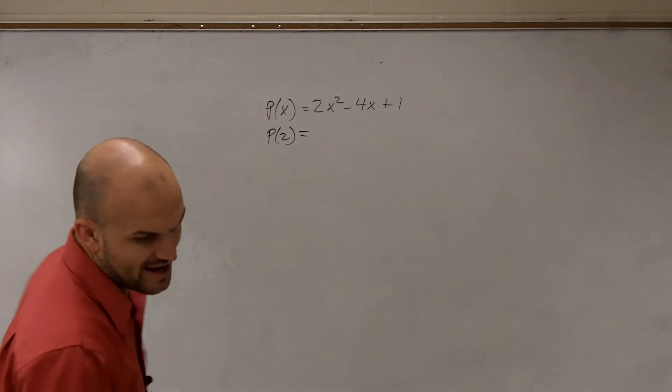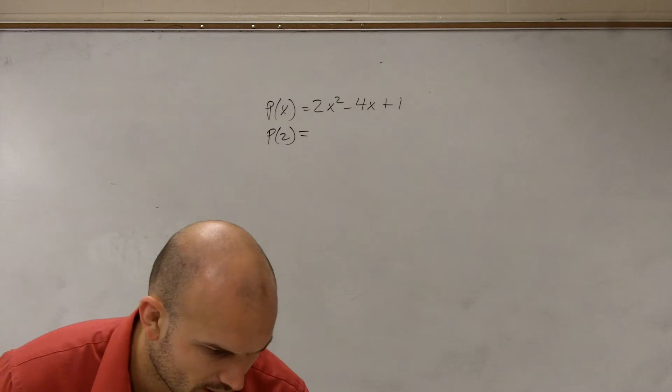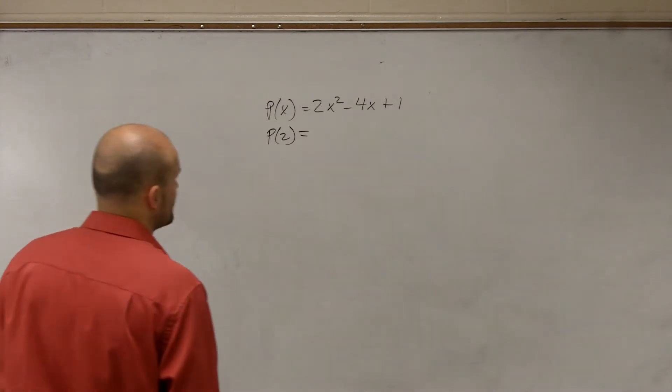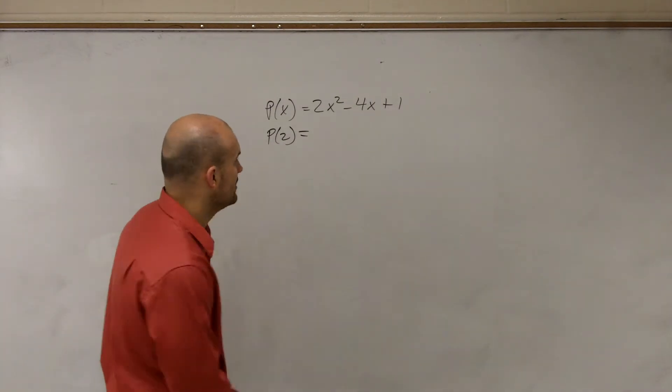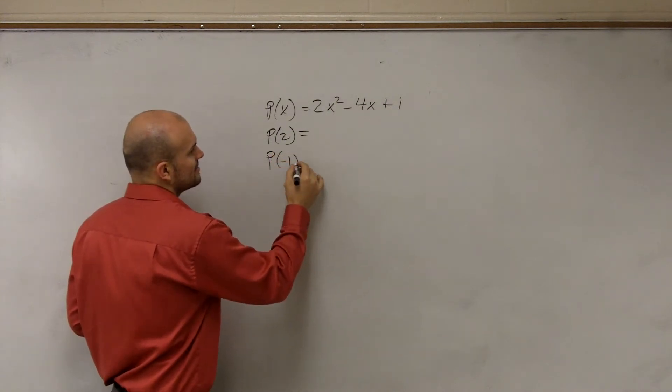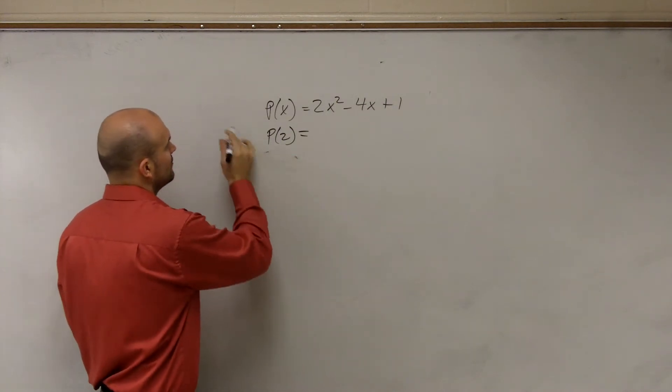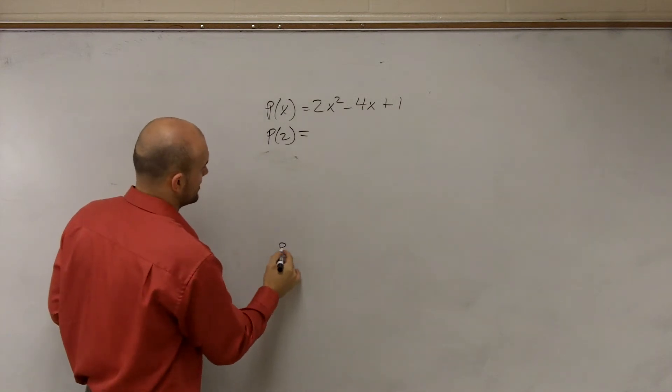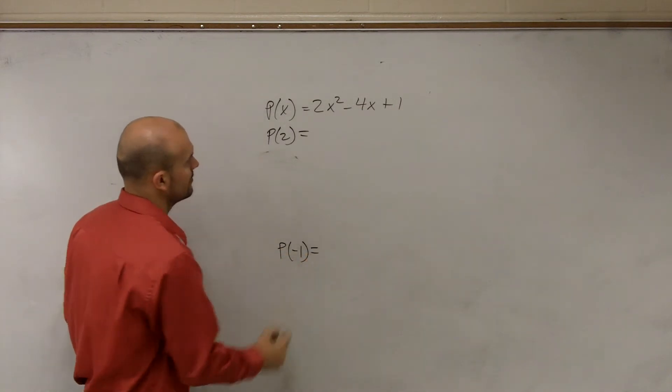So in this example I have P of x equals 2x squared minus 4x plus 1. And what I want you to do is find the value of P of 2 and P of negative 1. And we'll actually do that, P of negative 1.